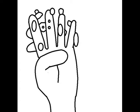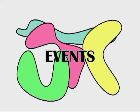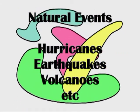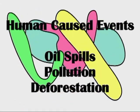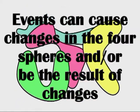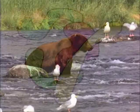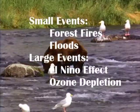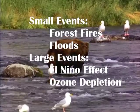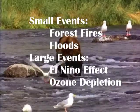A crucial part of the interactions in these systems is called events. Events can be natural, such as hurricanes, earthquakes, and volcanoes, or they can be caused by humans, like pollution. These events can cause changes or be the result of changes. Small events can be observed locally, and large events can be observed worldwide. Examples of small events are forest fires and floods. Examples of large events are the El Niño effect and ozone depletion.